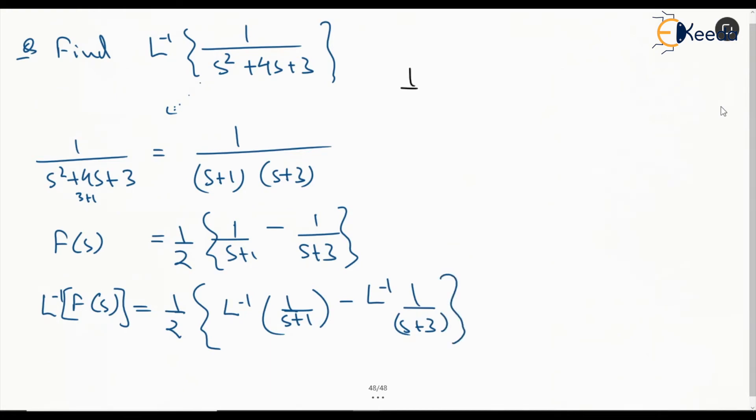So the first one, 1 by 2 is already there. This term is coming from e to the power of minus t, and this term is coming from e to the power of minus 3t. So our result is going to be e to the power of minus t minus e to the power minus 3t. This will be the Laplace inverse of the given equation.